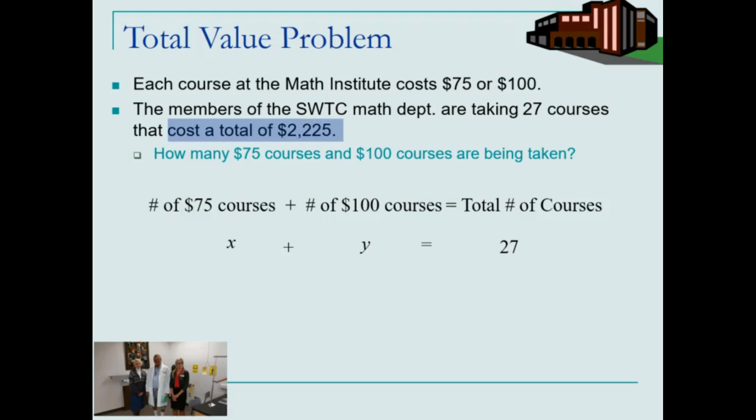To generate our second equation, we'll use the information about the total cost for these courses. Total cost of the $75 classes will be found by the number of classes times $75. To determine the total cost for the $100 classes, we'll take $100 times the number of $100 courses being taken is equal to the charge given.